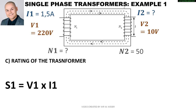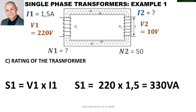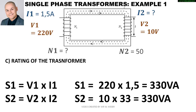To calculate the rating of the transformer, symbol S represents apparent power. There is no square root 3 — this is a single phase calculation — so it's V1 multiplied by I1. The voltage on the primary side is 220 volts and the current is 1.5 amps, giving us 330 volt-amps. Confirming with the secondary side gives the same answer, so all calculations are correct.